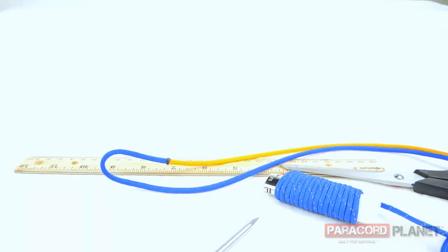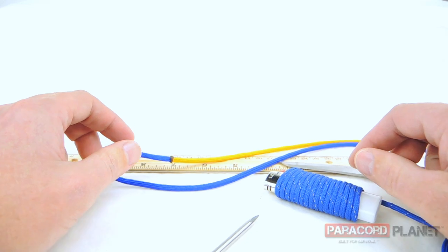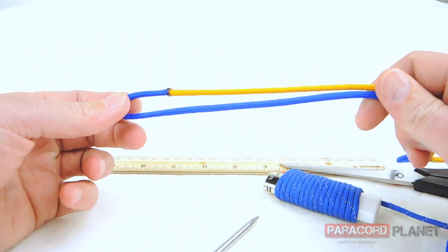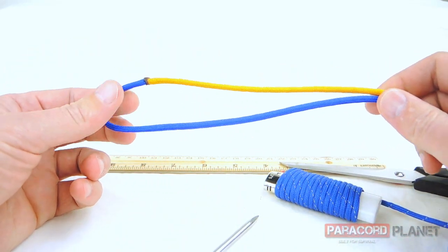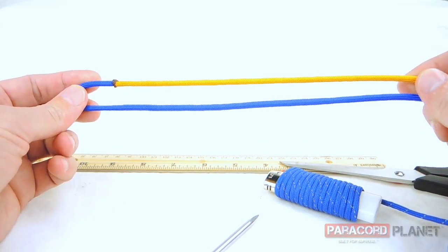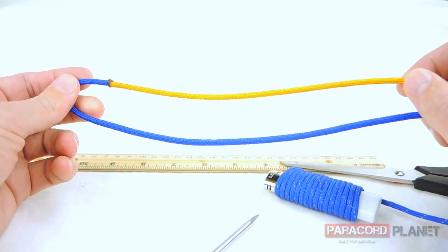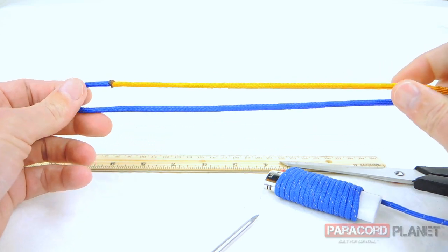Hi, this is Chris from Paracord Planet. Today we are going to be making the asymmetrical border bar paracord bracelet. And what you're going to need to start that out with is two colors of paracord. I've got six feet of each color here in a golden rod and an electric blue.